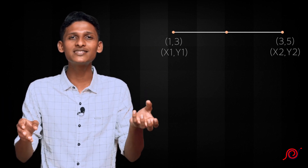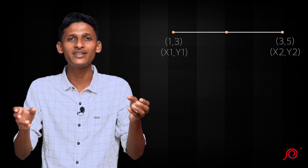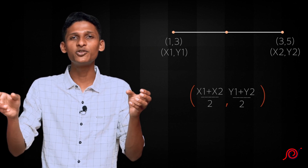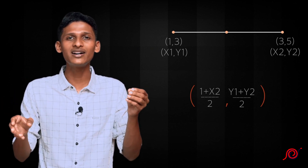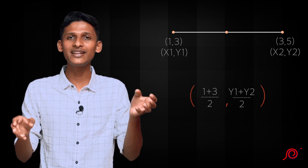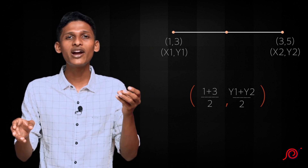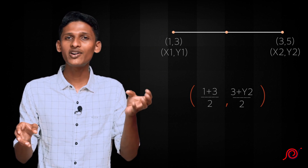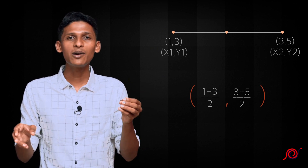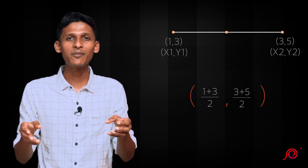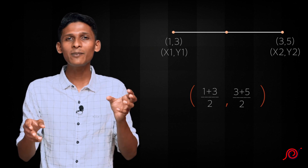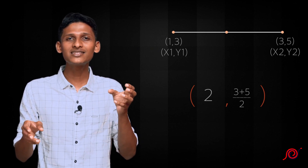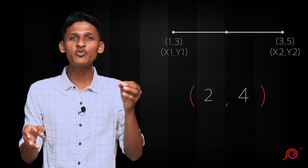We will take the coordinates of the midpoint using x1 plus x2 by 2, and y1 plus y2 by 2. Here x1 is 1, x2 is 3, y1 is 3, and y2 is 5. Let us substitute these values. The midpoint is 1 plus 3 by 2, and 3 plus 5 by 2. That gives us 2, 4.